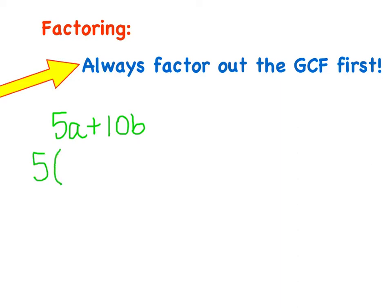We open up parentheses, and remember that factoring is like division. So when you're saying factor out a 5, you're really dividing out the 5 from 5a. So if I had 5a and I divided by 5, I would be left with a, plus. We'll bring down the plus sign. Then we're dividing 10b divided by 5, which is 2b. This is your answer. We have successfully factored out the GCF.